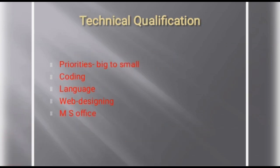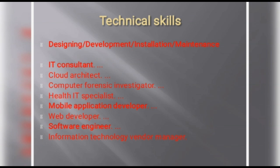Academic credentials are different from technical qualifications. For an IT student, prioritize your biggest skill first and go down to the smallest. For example, if coding is your best skill, write it first; languages second; web designing third; MS Office last.